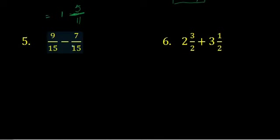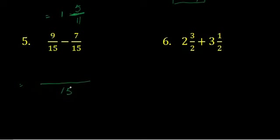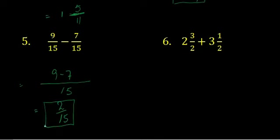Similarly, question number 5: 9 upon 15 minus 7 upon 15. I am giving you a little time to solve it yourself. Now question number 5: 15 is taken as common — it is basically the LCM. Since the denominator is the same, we write it one time. 9 minus 7 in the numerator gives 2, so the answer is 2 upon 15. Since the denominator is greater than the numerator, we leave the answer here.